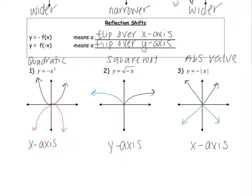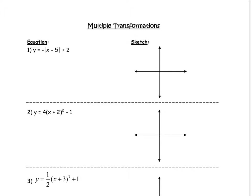Let's put it all together and do transformations with multiple shifts. Looking at the first equation: there's a negative on the outside, something inside, and something outside. Outside the parentheses means a vertical shift — we're going up two units. Inside the parentheses is opposite direction — this is actually going to the right five. And the negative on the outside is a reflection over the x-axis.